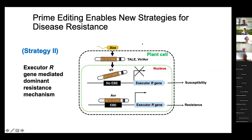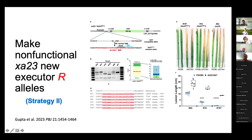The next strategy is to use a non-functional executor gene that does not contain the EBE — the TAL effector binding element. The recessive resistant gene cannot function for resistance, but if we can incorporate some TAL effector EBE elements into the non-functional resistant gene, then the TAL effector could activate this non-functional resistant gene and trigger resistance. That's the strategy: we can make this non-functional resistant gene become resistant by knocking in some of the cis elements into its promoter, making it an inducible, TAL-effector-dependent resistance.